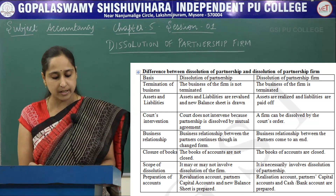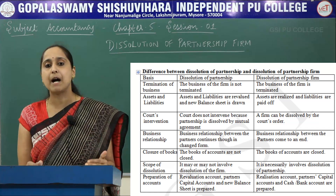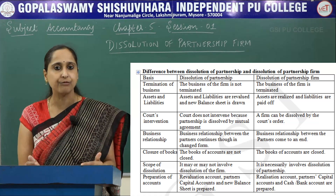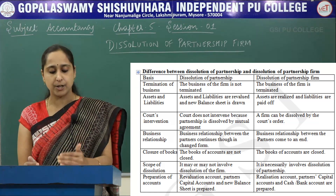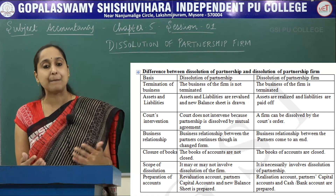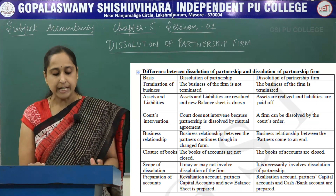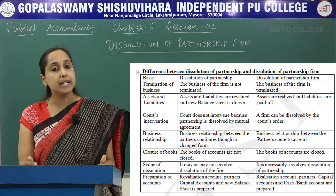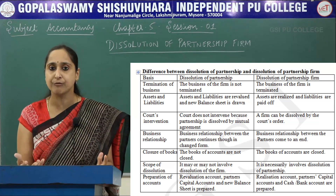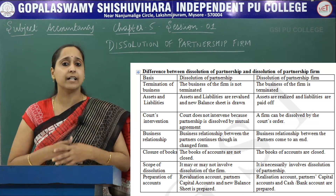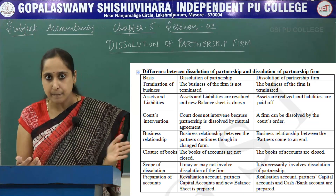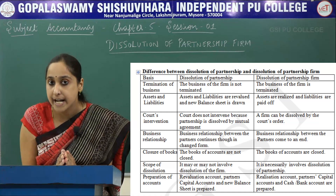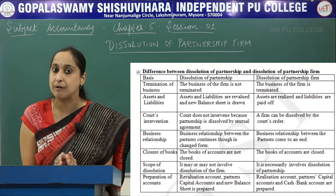Next is court's intervention. In Dissolution of Partnership, the court doesn't come between the partners — there is no interference of court. But in Dissolution of Partnership Firm, the firm can be dissolved by the court's order. Next is business relationship. In Dissolution of Partnership, the business relationship between the remaining partners continues in a changed form — it is continued with a new agreement. But in Dissolution of Partnership Firm, the business relationship between partners comes to an end.